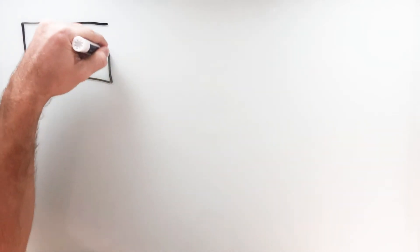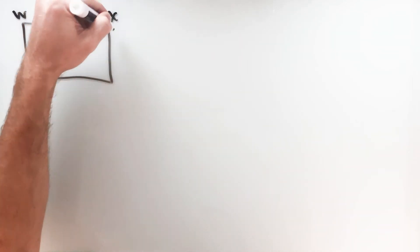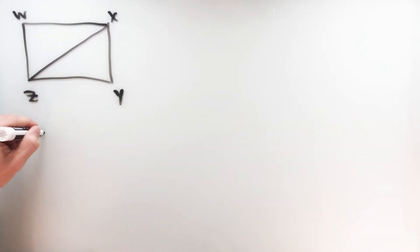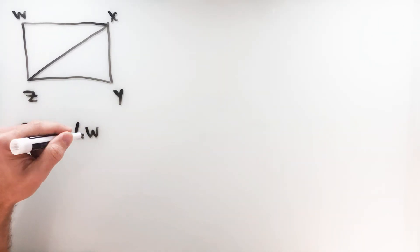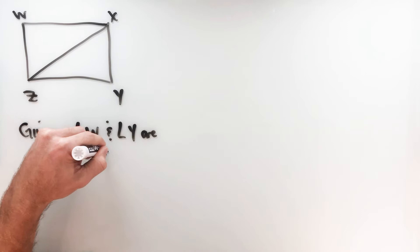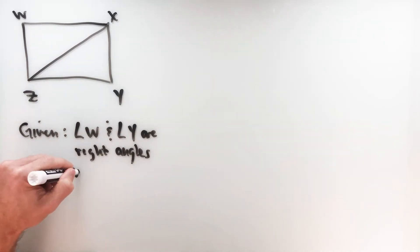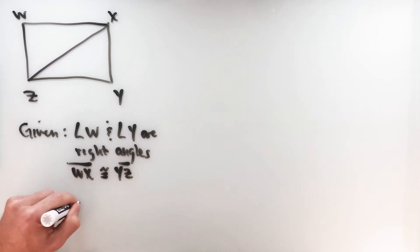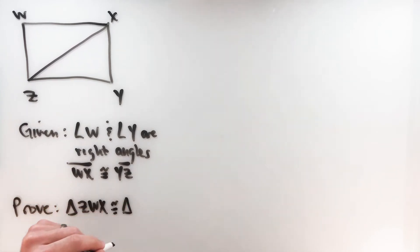Let's do a couple of proofs — these might look a little different but they follow the same idea as your other triangle congruence properties. We have two triangles here, WXYZ. The given information: angle W and angle Y are right angles, and segment WX is congruent to segment YZ. We're going to prove that triangle ZWX is congruent to triangle XYZ.